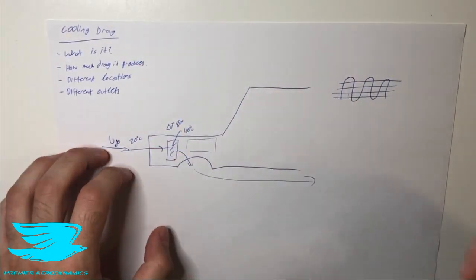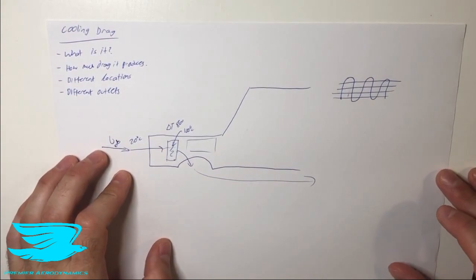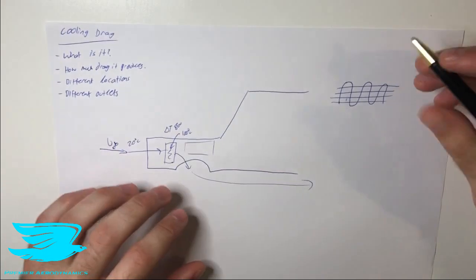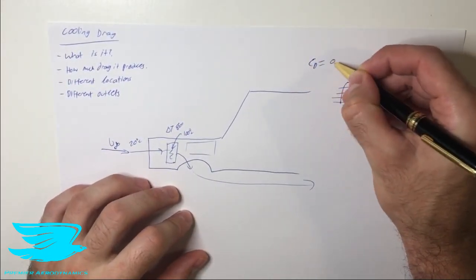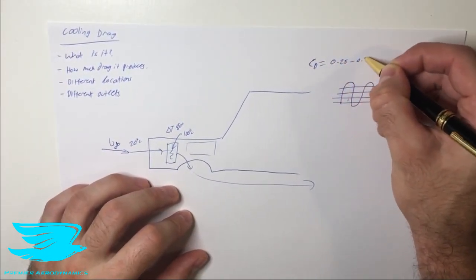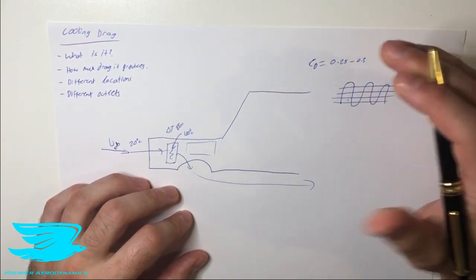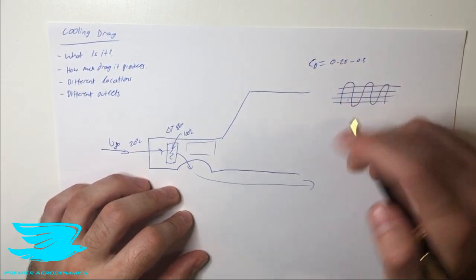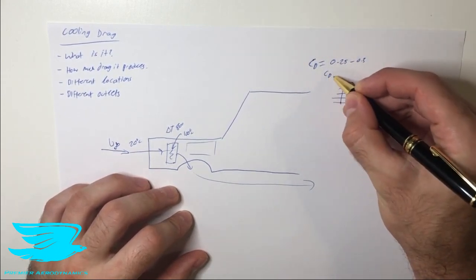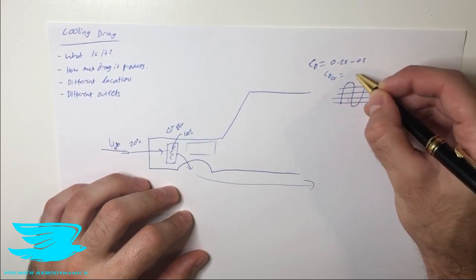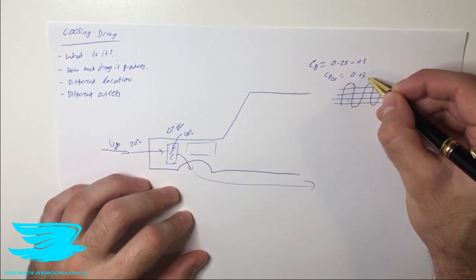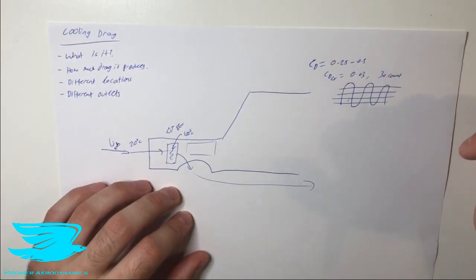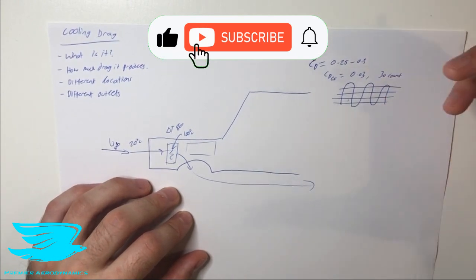First, let's cover how much drag this produces. This is quite an interesting topic, because for internal combustion engines this is quite a lot. It's about 10% of a regular car. A regular car's drag coefficient is about 0.25 to 0.3 right now. There are some which are lower, about 0.21, some which are higher, 0.35. But this is the general range. So the drag coefficient of the cooling flow is about 0.03, or about 30 counts. These are the same things, just different units.